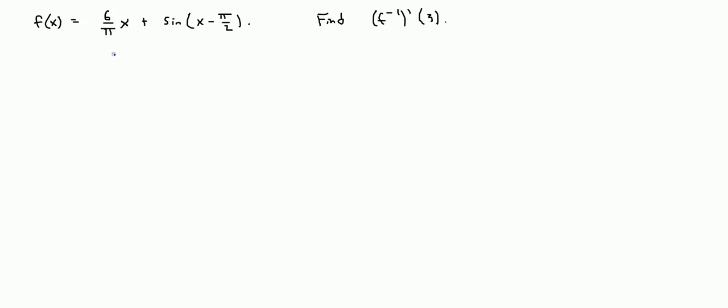So in this problem we have f of x equals 6 over pi times x plus sine of x minus pi over 2. And they want us to find f inverse prime of 3. So the derivative of the inverse evaluated at 3.